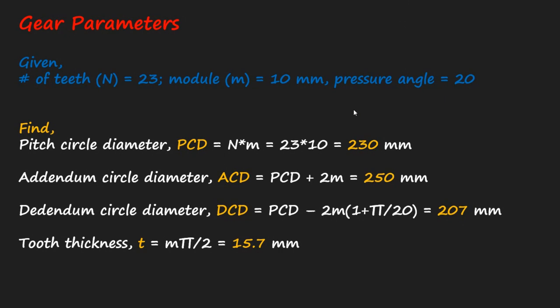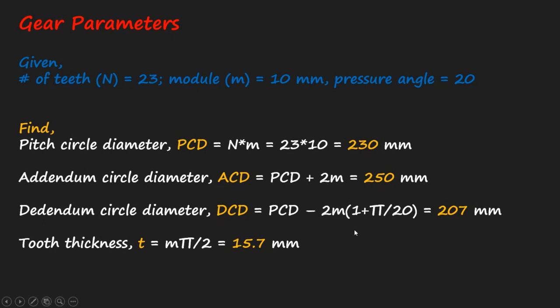Now I'm going to show you how to draw a spur gear in SOLIDWORKS. Generally, the parameters of a gear given are the number of teeth, module, and pressure angle. Using these given parameters, we also need to find some additional parameters such as pitch circle diameter, addendum circle diameter, dedendum circle diameter, and tooth thickness. We're going to use all these parameters to draw our spur gear.